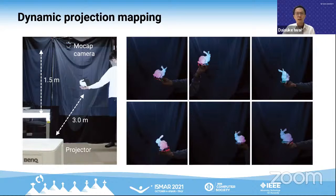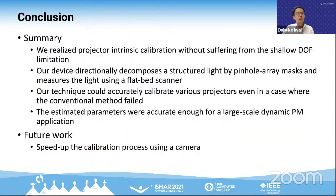We confirmed that the estimated intrinsic parameters enabled a relatively large-scale dynamic projection mapping application. We estimated the pose of the projector in the world coordinate system using the intrinsic parameters and manually obtained correspondences. In conclusion, we realized projector intrinsic calibration that does not suffer from the shallow depth of field limitation. Our future work would be to speed up the calibration process using a camera instead of a scanner. Thank you very much.